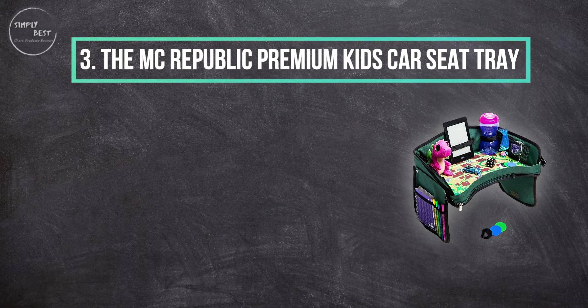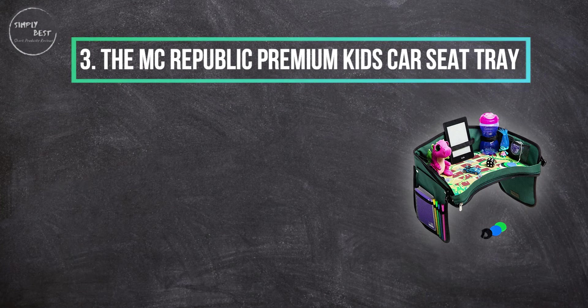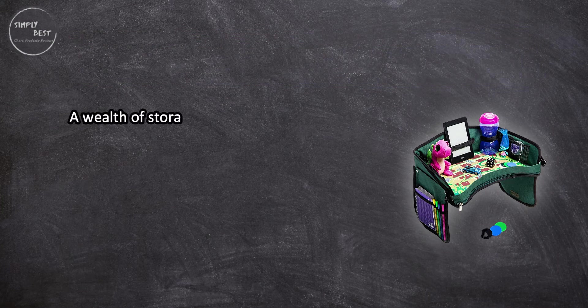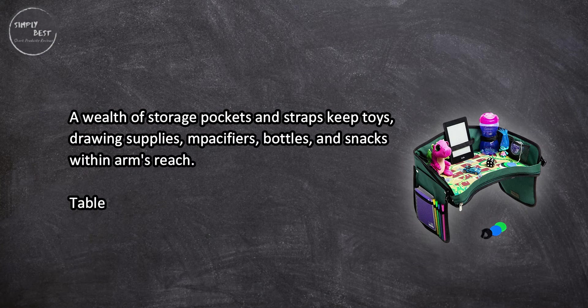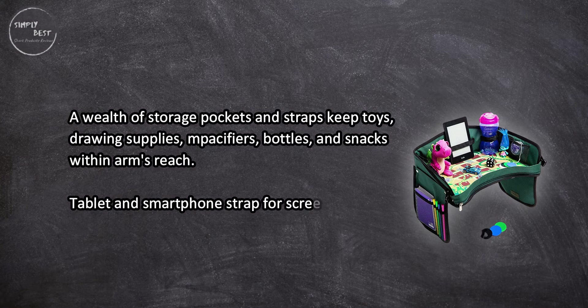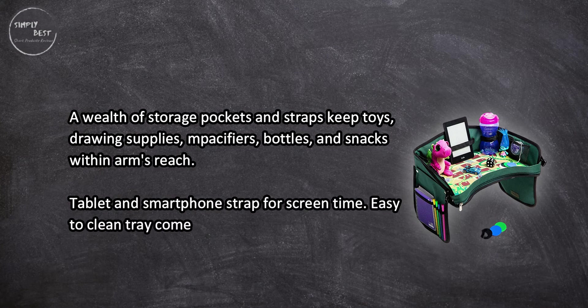At number three, the MC Republic premium kids car seat tray. A wealth of storage pockets and straps keep toys, drawing supplies, pacifiers, bottles, and snacks within arm's reach. Tablet and smartphone strap for screen time. Easy to clean tray comes printed with a game of snakes and ladders.